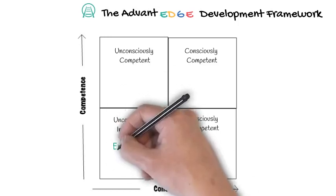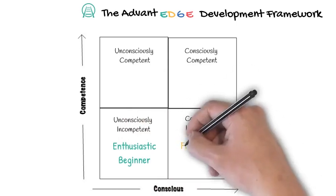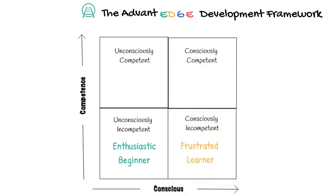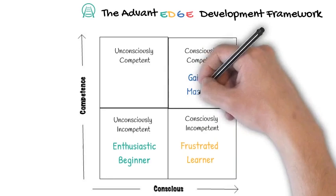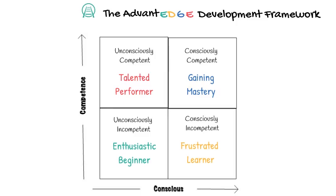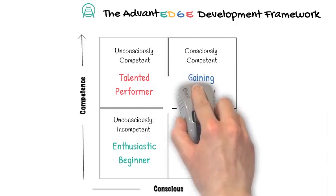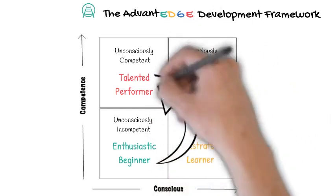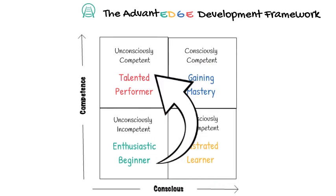Another way of looking at these four quadrants is that we begin as enthusiastic beginners and start to learn, often becoming frustrated as we want to develop skills faster and more effortlessly. After a while, we begin to gain mastery and continue to practice until it truly becomes effortless and we are a talented performer. What we want to do is skip all the hard work, practice, and learning and jump straight from beginner to talented performer.